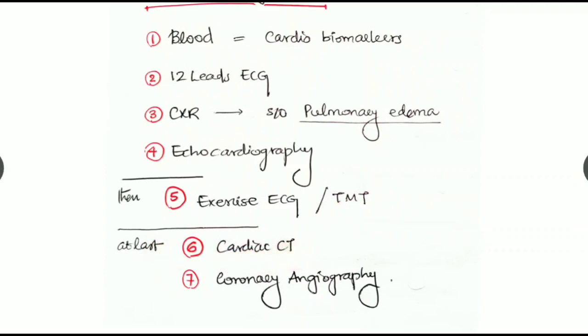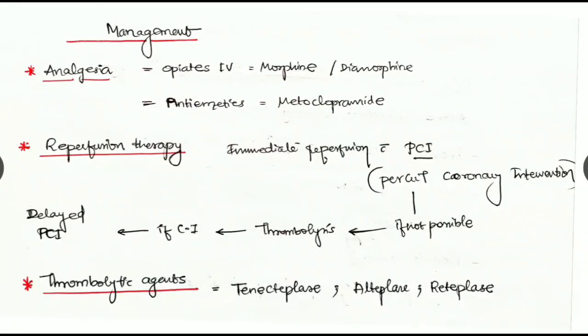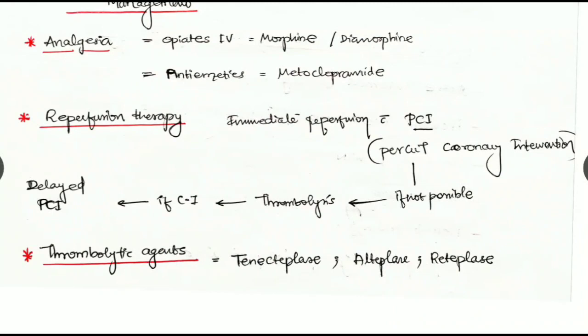Next is about the management of acute coronary syndrome. We have to give analgesia like opioids IV like morphine, diamorphine, etc., along with antiemetics like metoclopramide. We have to go for reperfusion therapy with immediate reperfusion with percutaneous coronary intervention PCI. If it is not possible, then go for thrombolysis. If thrombolysis is contraindicated, then we can go for delayed PCI.